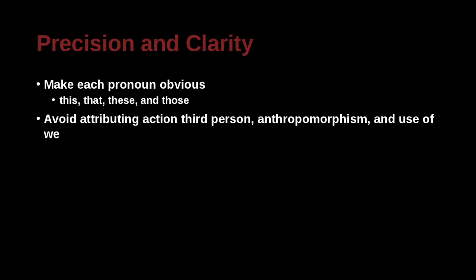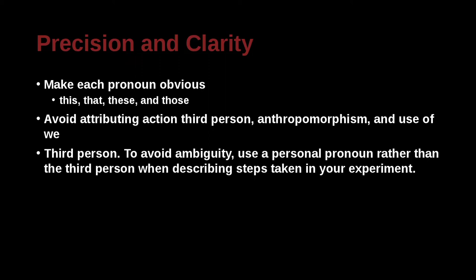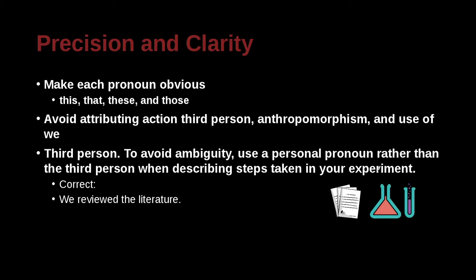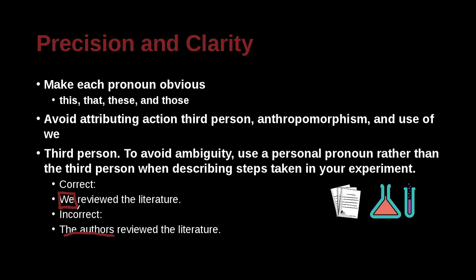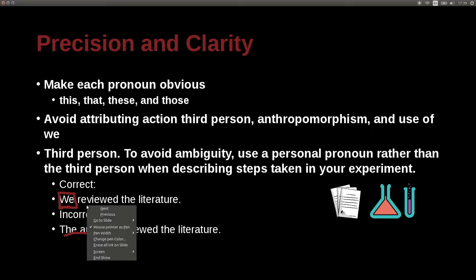Try not to use third person and anthropomorphism, and be careful with the use of 'we.' For example, with third person, you want to avoid ambiguity — being unclear. Use a personal pronoun rather than the third person when describing the steps in your research. For example, 'we reviewed the literature.' If we are the people who did the research, more than two people, then that would be 'we.' This is much better than saying 'the authors reviewed the literature,' which is third person. Writing 'we' makes it more active and direct, easier to read, and doesn't waste space.